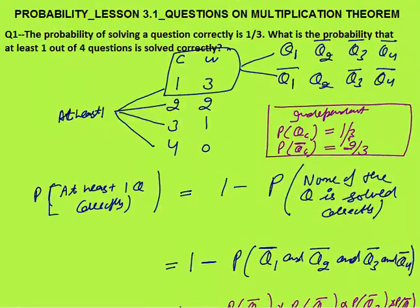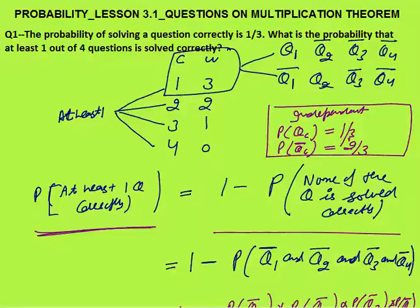This question comes in exams and you can solve it under 30 seconds. The key point is: probability of solving at least one question correctly equals 1 minus probability that none of the questions is solved correctly. As events are independent, probabilities get multiplied.